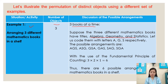The possible arrangements are: AGS, ASG, GAS, GSA, SAG, and SGA. With the use of the fundamental principle of counting, three times two times one equals six. Thus, there are six possible arrangements of mathematics books on the shelf.